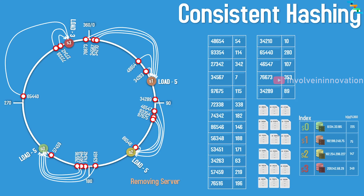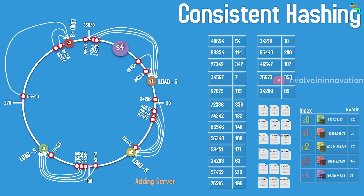The same applies when adding a server. Adding server S4 at a new position means only the data previously mapped to S1 that now falls between the old and new positions — like 76673, 34567, and 34210 — needs to be remapped from server 1 to server 4. All other data on all other servers remains intact. This is the only change needed.